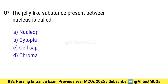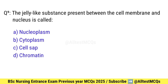Question number 9. The jelly-like substance present between the cell membrane and nucleus is called what? Correct option is D: Cytoplasm.